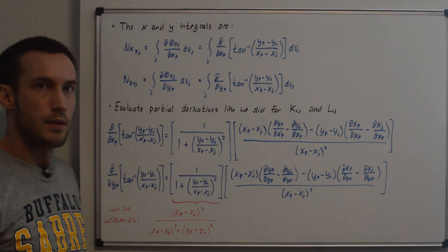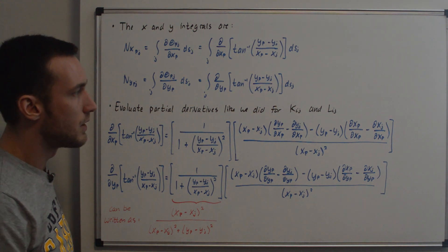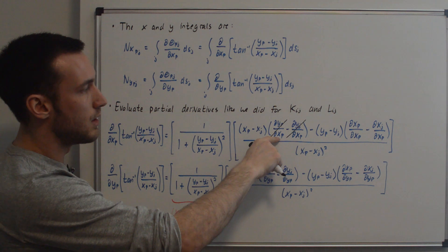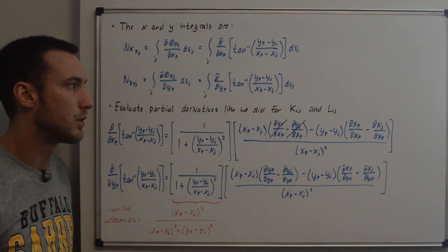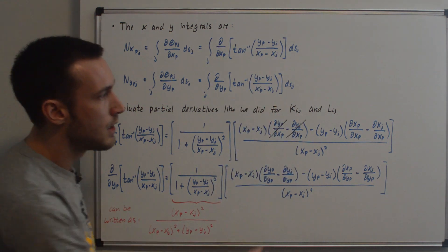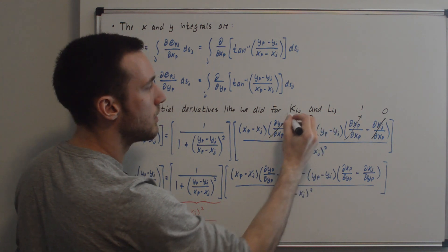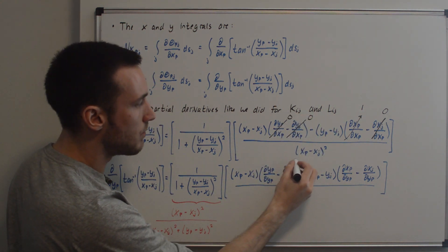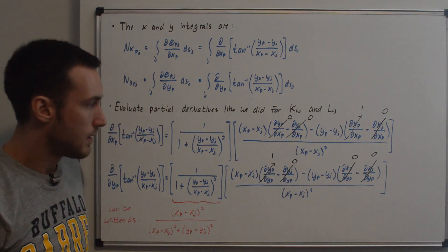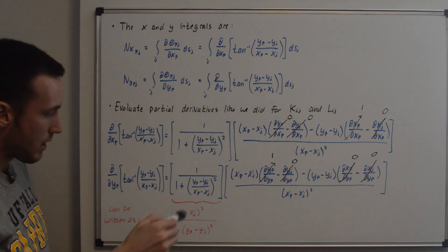These partial derivative terms are actually easier to evaluate because many cancel to zero. For the x-derivative: dx_j/dx_P is zero, dy_j/dx_P is zero because x and y are orthogonal, and dx_P/dx_P equals one. Similarly for the y-derivative: dy_j/dy_P is zero, dx_P/dy_P is zero, dx_j/dy_P is zero, and dy_P/dy_P equals one. Also, the denominator expression can be rewritten in a simplified form.